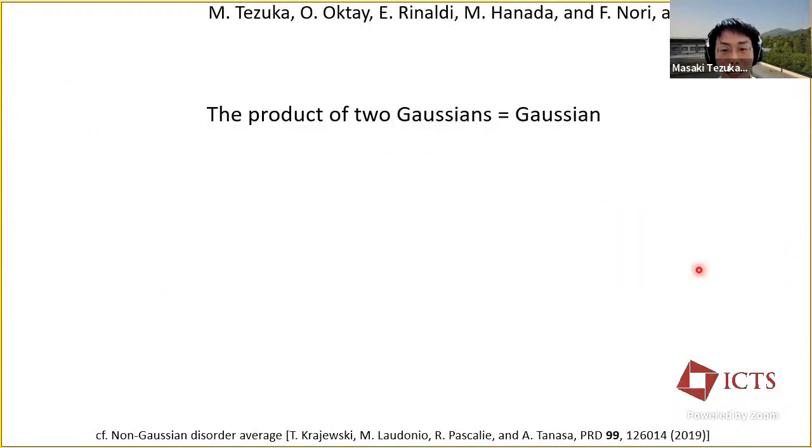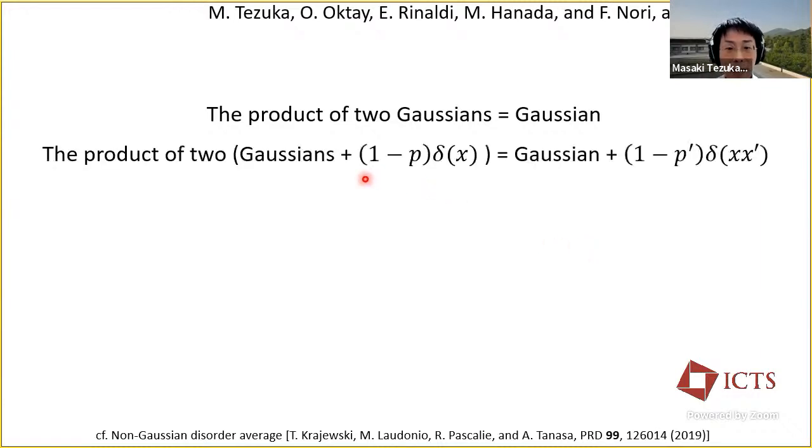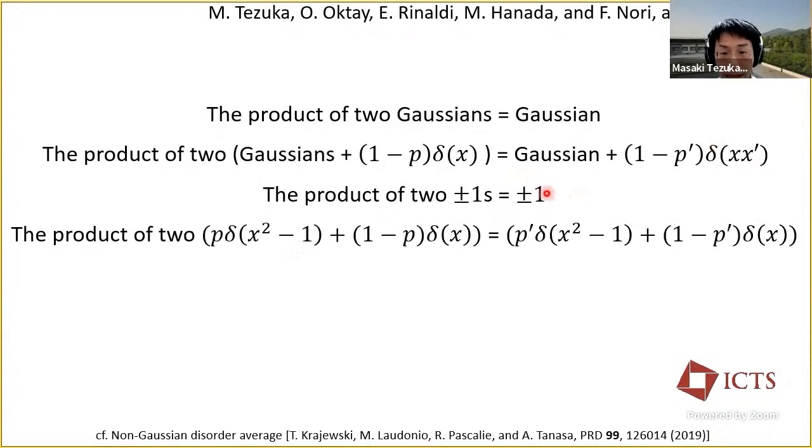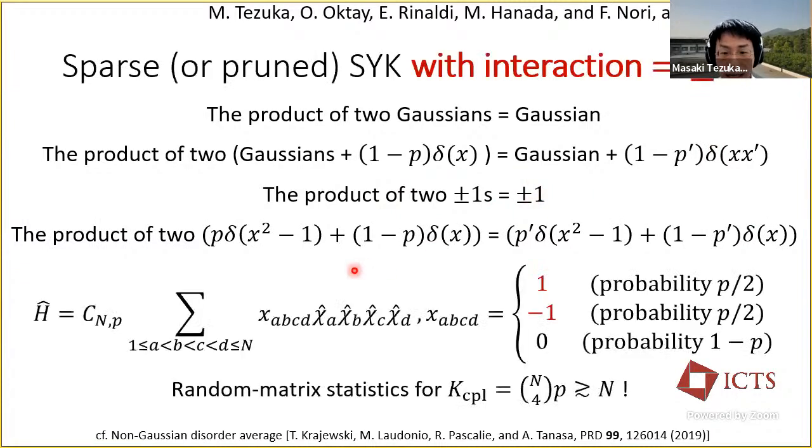The important thing in the diagrammatic expansion for the usual dense SYK model is that the product of two Gaussian distributions is Gaussian. Looking at the sparse SYK model, I thought as following. If you take the product of two probability distributions, that are Gaussian plus delta function, you obtain a distribution function in the same shape. So much if not all of the arguments for the fully connected SYK4 can be reused. However, the product of two distribution functions that are plus or minus 1 is again plus or minus 1. Then, we can make the distribution sparse in the same way. We can take the Hamiltonian like this, with chi being the Majorana fermions. We have shown that we observe random matrix statistics for the number of non-zero terms, only as many as the fermions.